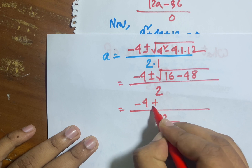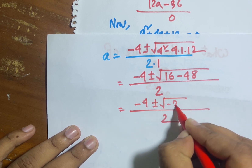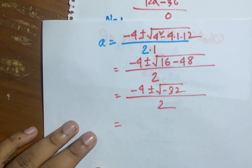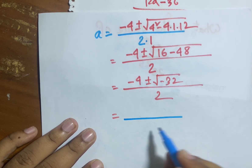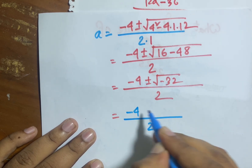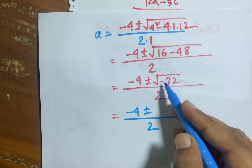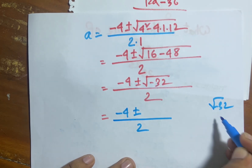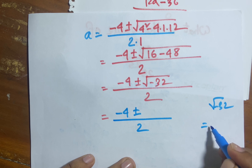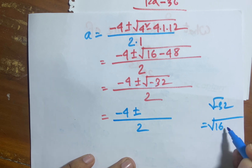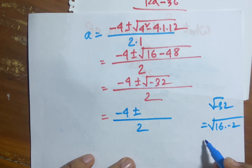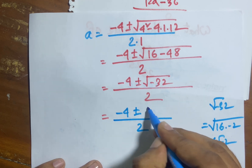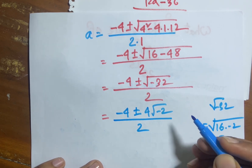This gives root over minus 32. So a equals 2 minus 4 plus or minus root over minus 32, over 2. What is the value of root over minus 32? I can say easily it equals root over 16 times minus 2, so root over 16 equals 4, giving 4 root over minus 2.